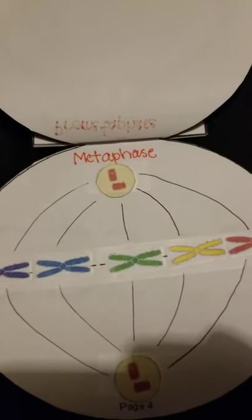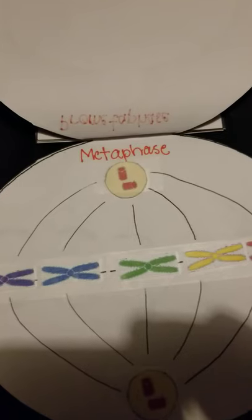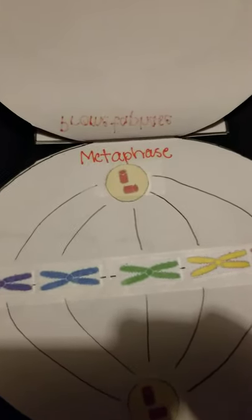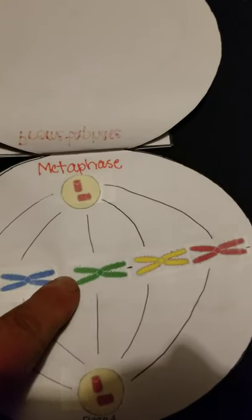Moving on to the next stage, we have metaphase. During metaphase, the chromosomes line up at the metaphase plate. The spindles capture the chromosomes and prepare for separation as the chromosomes are lined up and ready to divide. You can see the lined-up chromosomes and centrioles at the poles.